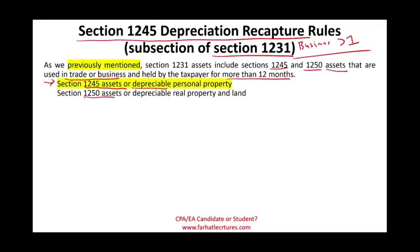Section 1245 assets are depreciable personal property used in business. What are depreciable personal property? We're talking about office furniture, computers, vehicles, trucks, machinery, movable assets — assets that are not attached to the land. Those are personal property assets, anything that can move. Section 1250 assets are depreciable real property and land — buildings, warehouses, something attached to the land, and the land itself.